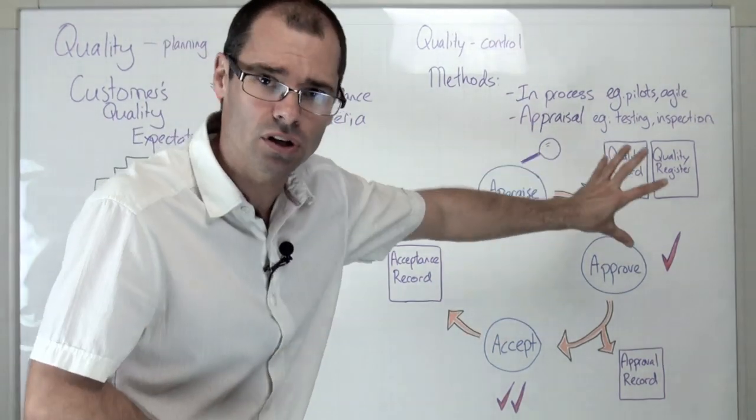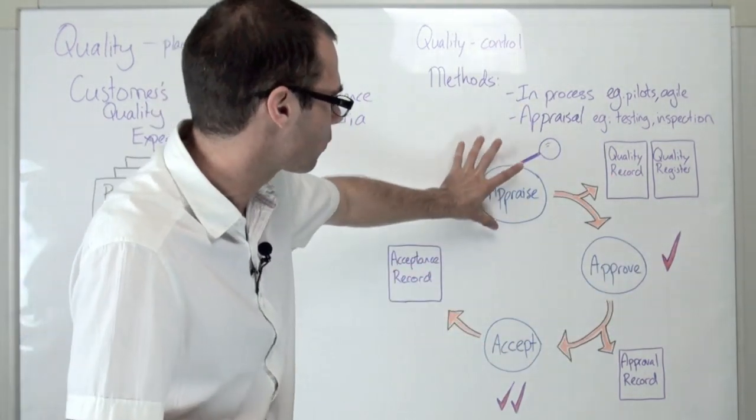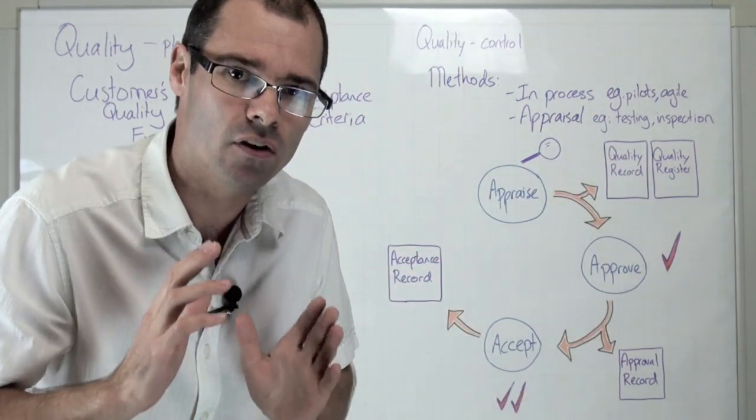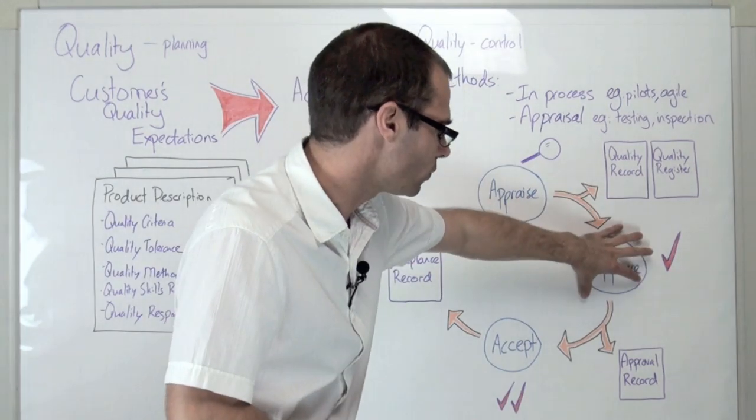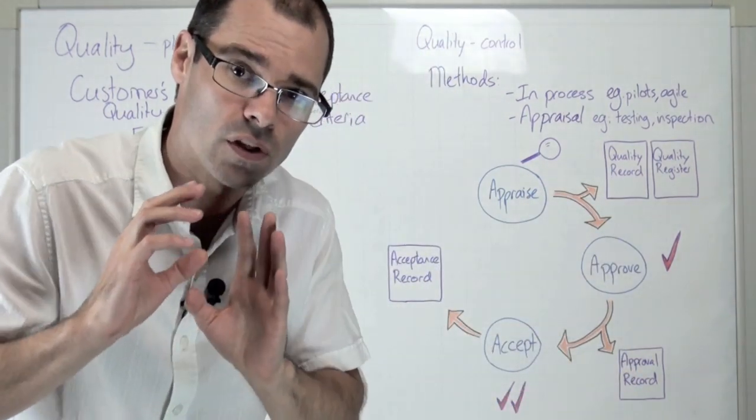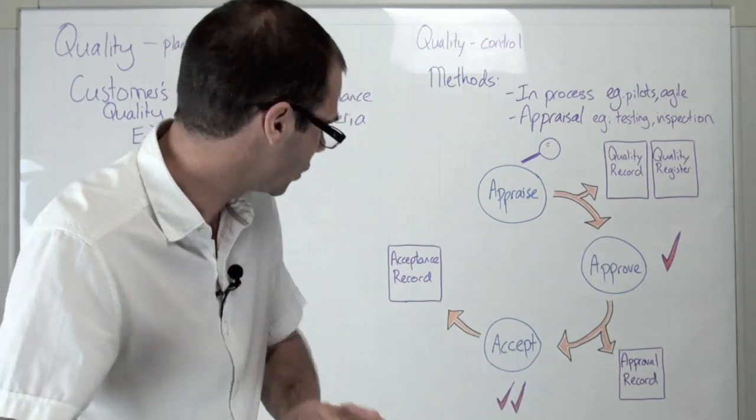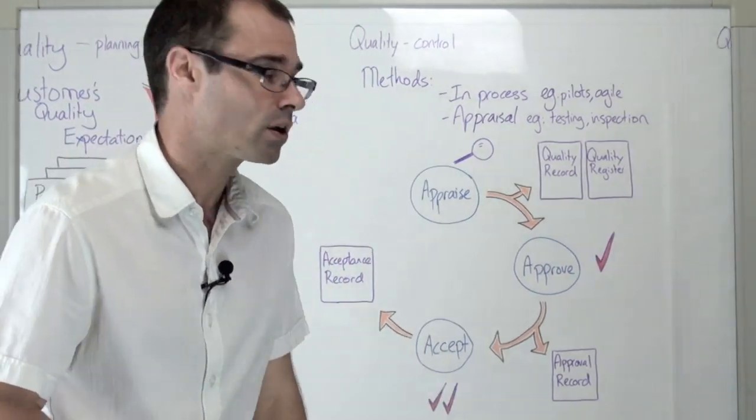We have three steps within quality checking in Prince2. We've got the appraisal of the product, which involves creation of a quality record and update of the quality register. The approval step involves creation of the approval record. Finally, we have accepting the product and accepting the project, which involves creation of an acceptance record.